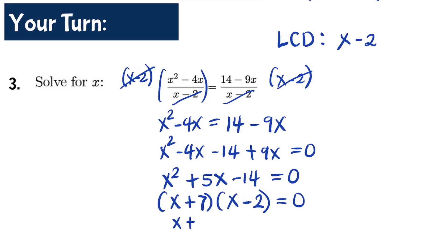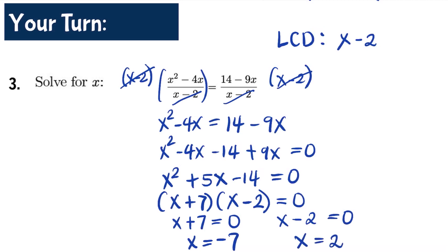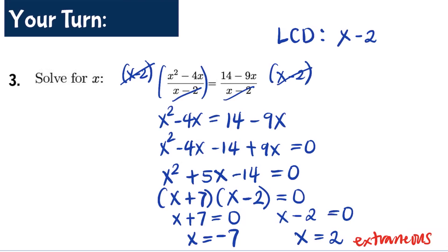Using the zero product property: x+7 = 0 or x-2 = 0, giving x = -7 or x = 2. We check for extraneous solutions: x = 2 is an extraneous solution because plugging 2 into both denominators makes them equal to zero. Therefore, the only answer for question number three is x = -7.